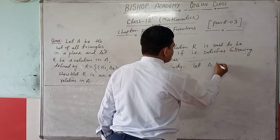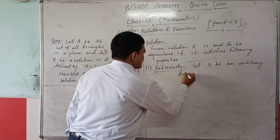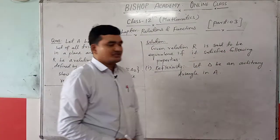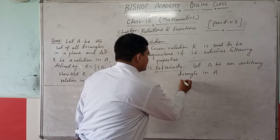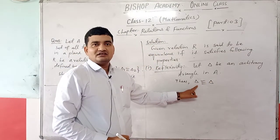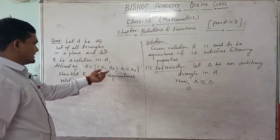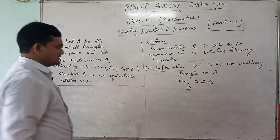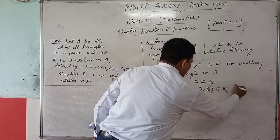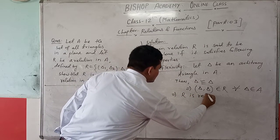Reflexivity: Let Δ be an arbitrary triangle in A. Then Δ is congruent to Δ, meaning every triangle is congruent to itself. This implies that (Δ, Δ) belongs to R for all Δ in A. Therefore, R is reflexive.